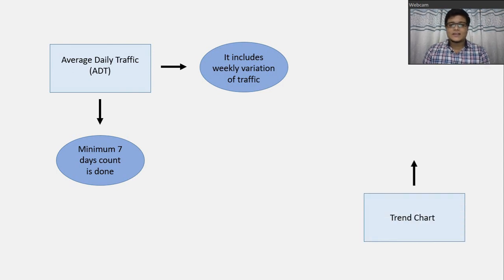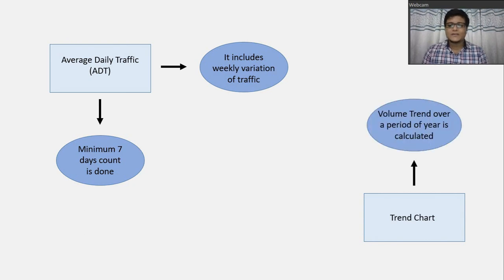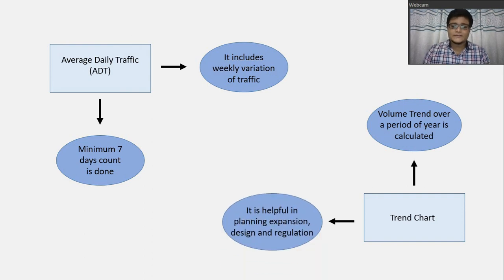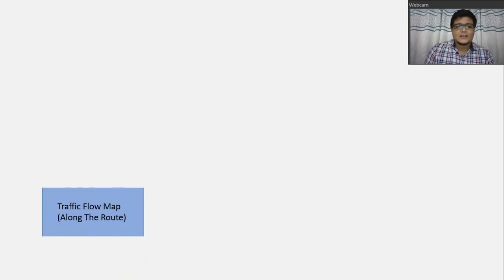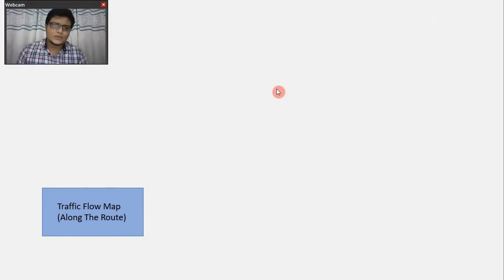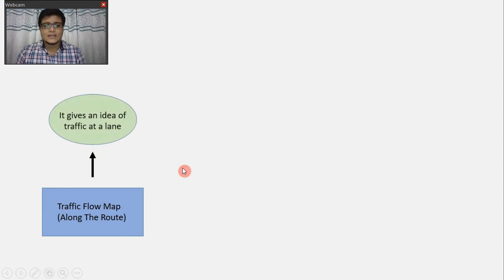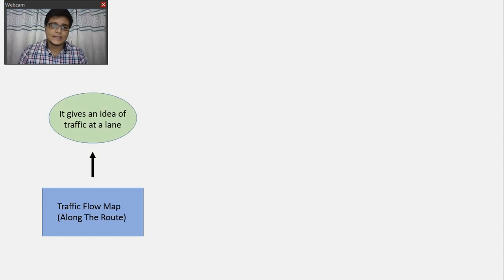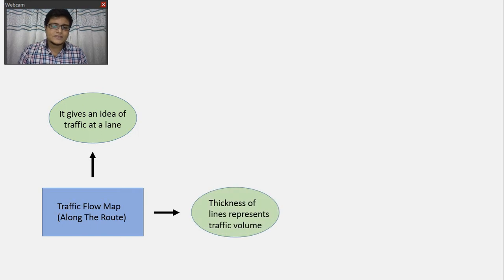There is another form of representation of traffic volumes called the trend chart, where the volume trend over a period of years is calculated. It is very helpful in planning expansion design and regulation. There is also a traffic flow map along the route, which gives an idea of traffic at a lane — the thickness of the line represents the traffic volume, so a thicker line means a higher traffic volume.